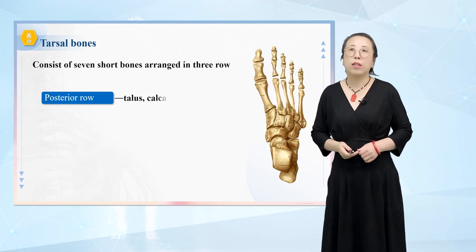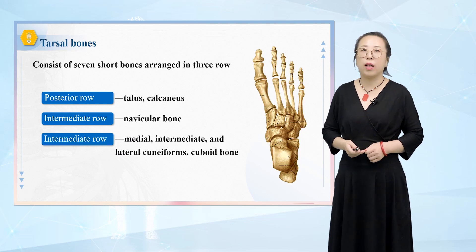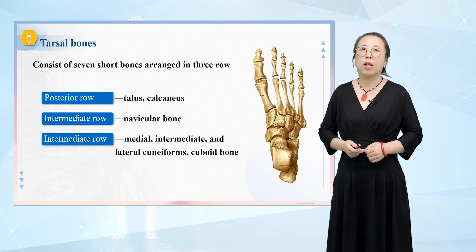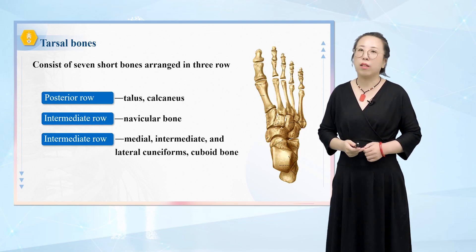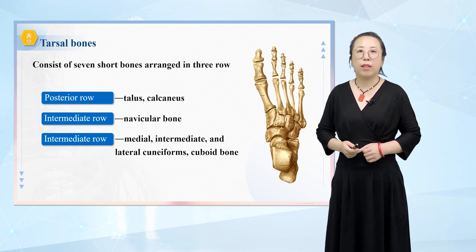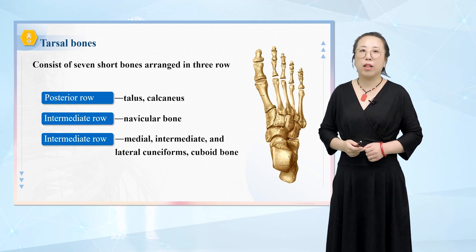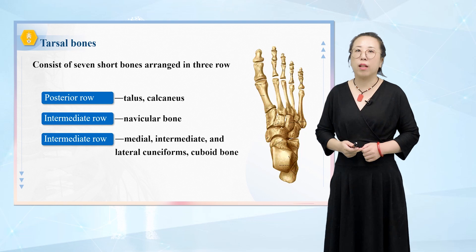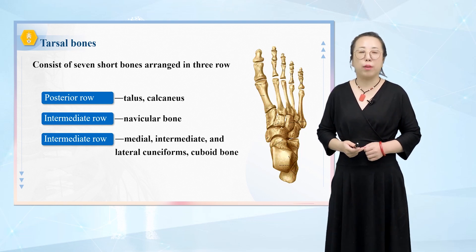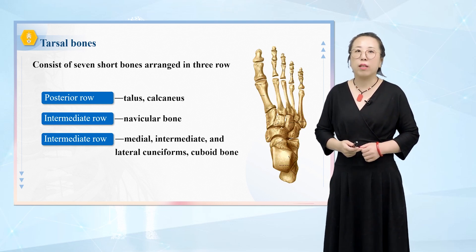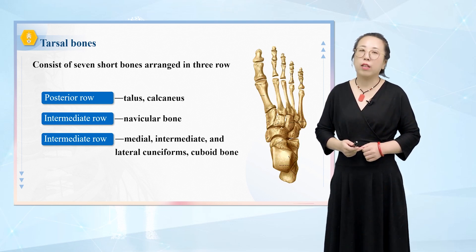Tarsal bones. There are seven tarsal bones which are short bones and are divided into three groups: anterior, middle, and posterior. The posterior group includes the talus and calcaneus. The posterior bone is reduced in the anterior tract. There is a trochlea of both the tibia and the navicular bone. The middle group includes the medial wedge, middle wedge, and lateral wedge, and the cuboid.